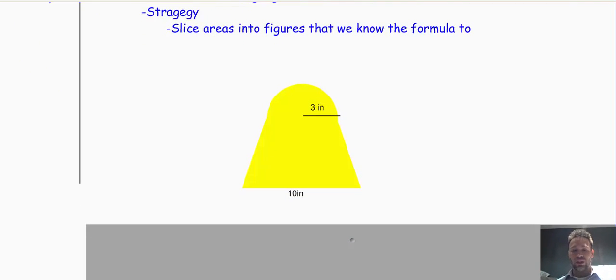Let's look at the first example. I have this figure - it's a figure that I don't have the formula for. I don't have a formula for whatever the heck this is. What I can do, though, is slice this into a hemisphere on top and a trapezoid on the bottom.